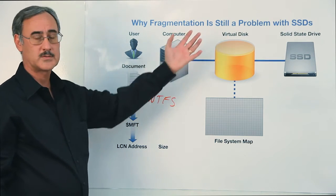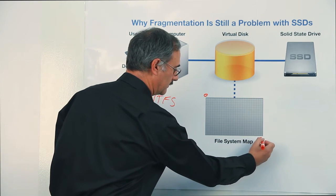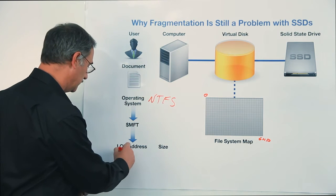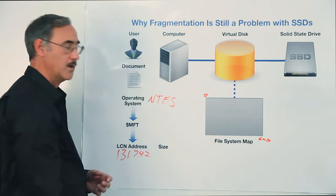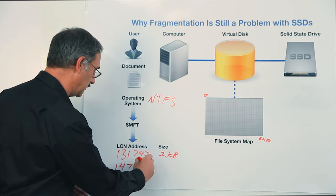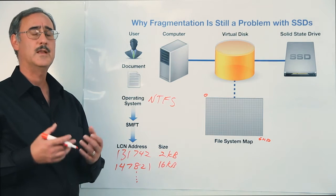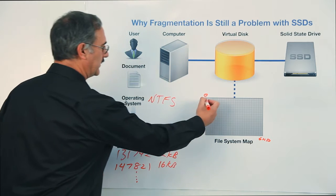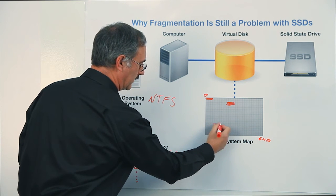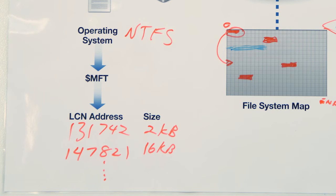There's a virtual disk representation where Windows starts from the first addressable address to the end. If a user needs to create a file, it may have a logical cluster starting address of 131742 for a size of 2KB. Then the next address might be 147821 for 16KB. This goes on and on for every different extent for that file.